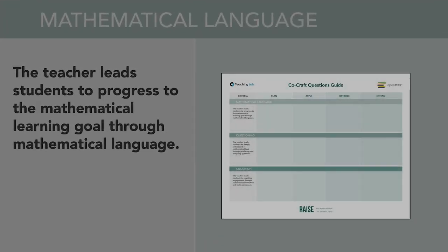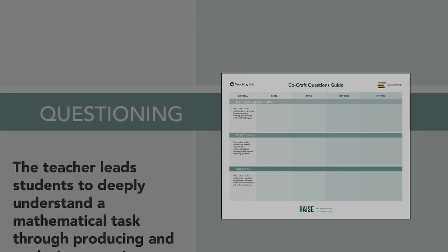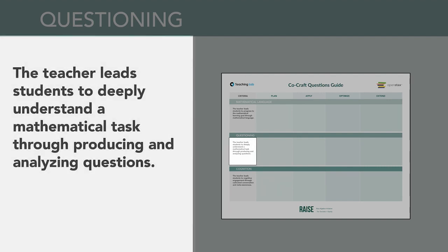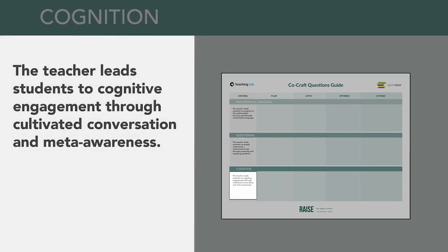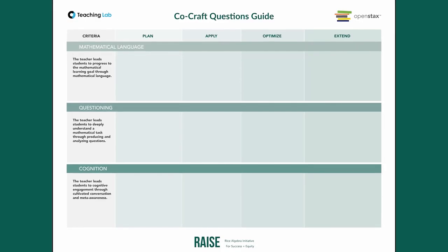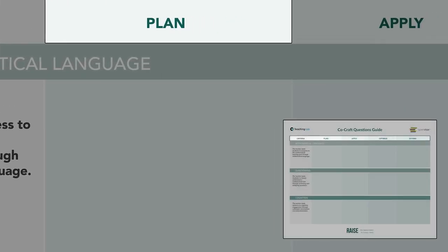Specifically: one, the teacher leads students to progress to the mathematical learning goal through the use of mathematical language. Two, the teacher leads students to deeply understand a mathematical task through producing and analyzing questions. And three, the teacher leads students to cognitive engagement through cultivated conversation and meta-awareness. Throughout the video, we'll keep returning to these criteria and building on them to help us customize this routine for our students.